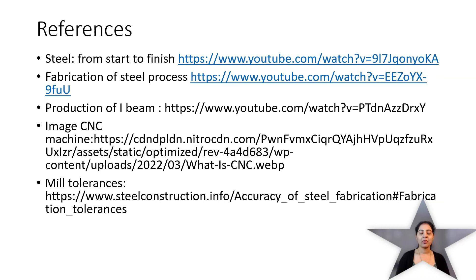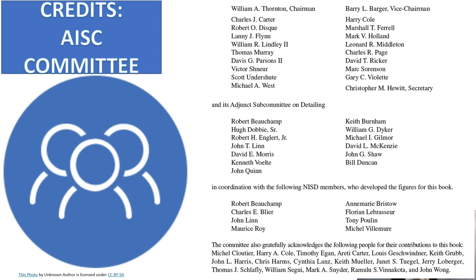These are the references used to study steel production and fabrication processes, along with links for the images. Please watch the video 'Steel from Start to Finish' and the video on the fabrication of steel processes — you will see all the processes performed in the fabrication shop, which will help clarify your concepts. This is the AISC committee who prepared the Manual of Steel Construction Detailing, and this completes Chapter 1 — Introduction — from that manual.